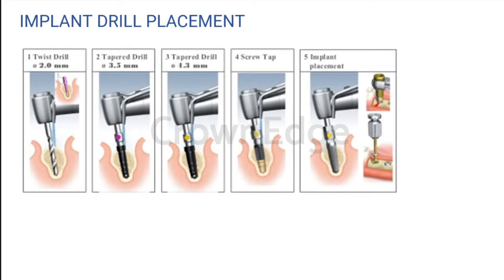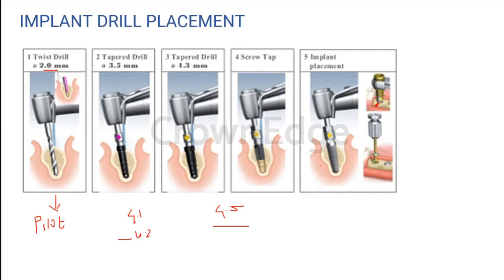This is the drill placement. We have something called a pilot drill, which is 2 millimeters — the first drill you place to make a small opening into your bone. After which, depending upon the size of the implant, we go to the corresponding drill size: 2, 2.75, 3.2, 3.5, 4.3, depending upon what implant you're placing. Suppose you are placing a 4.5 millimeter implant — we do not drill till 4.5 millimeters; we drill just up to 4.1 or 4.2 millimeters, then push the implant through so that we have a nice hold on the bone. We want nice tactile sensitivity with the bone. We do not want it to just float into the bone space. Always one drill less.